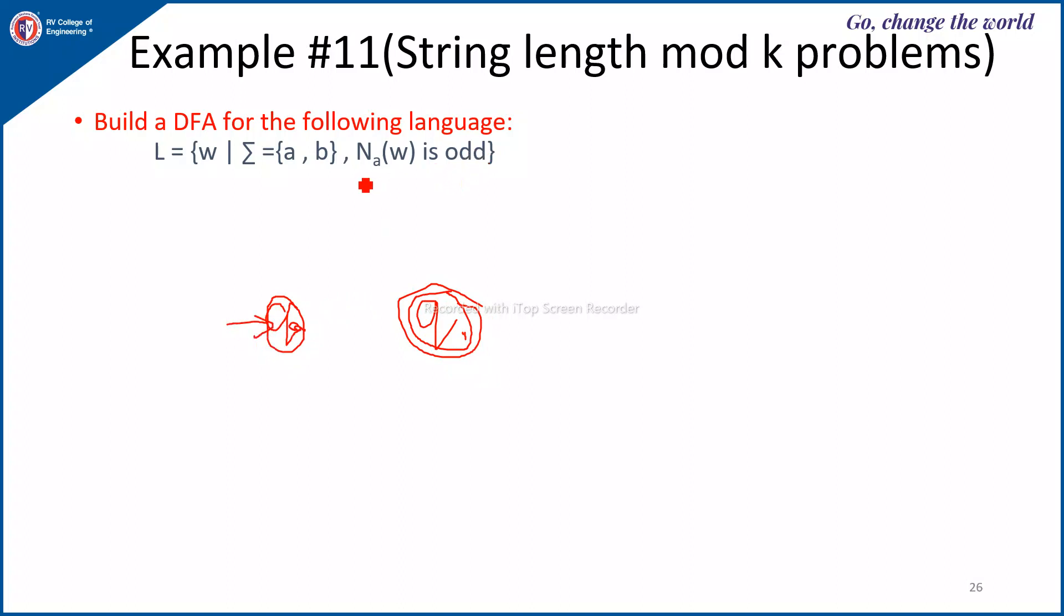Now here only on A, the length, A length, we have the condition. So if it is Q0, then the length is 0. Then if you have first A, it means you have the length of A is odd. So it goes to the state Q1 on only A. If one more A is appearing, it means the number of A's is even. So it goes back to the state Q0.